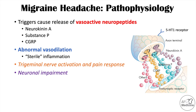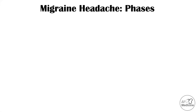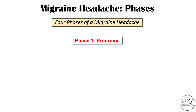Before we get into the symptoms, it's important to understand that a migraine headache goes through certain phases. There are four phases: the first is known as the prodrome, the second is the aura, the third is the headache itself, and the fourth is the postdrome.